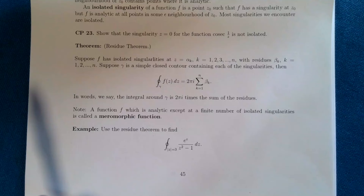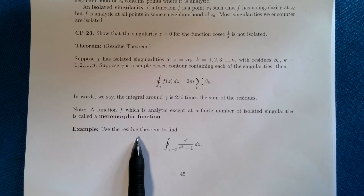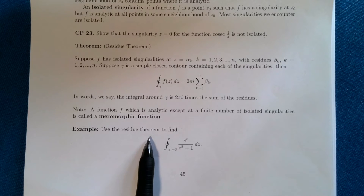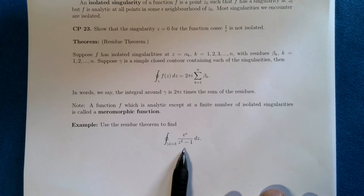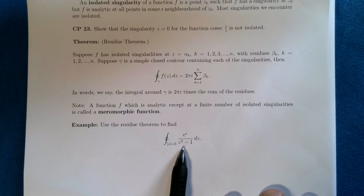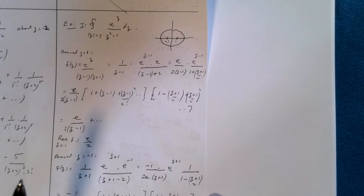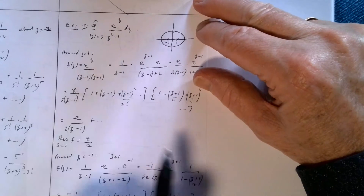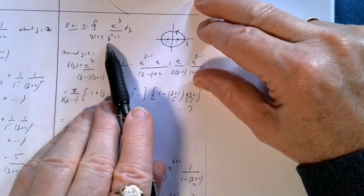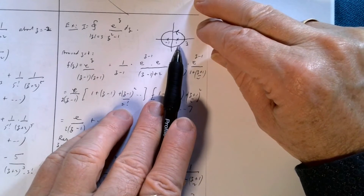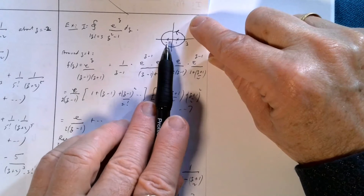We're going to look at using the residue theorem. We'll do this in a much quicker way later, but here we'll work through it using Laurent series. We're going to work out this integral — which you could also compute by Cauchy's integral formula, as we've done before — but I'm going to recalculate it using Laurent series and residues. Here's the worked solution. I draw a picture: our contour is |z| = 3. We've got two singularities inside the contour, one at z = −1 and one at z = 1, and I need to work out the residue at each singularity. I'll start with z = 1.